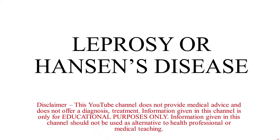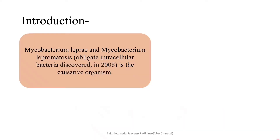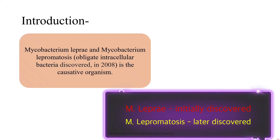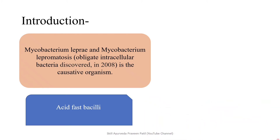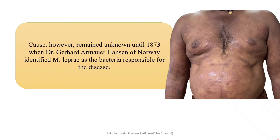Today I am going to talk about leprosy, that is Hansen's disease. The causative organisms are Mycobacterium leprae and Mycobacterium lepromatosis, which is an obligate intracellular bacteria discovered in 2008. Initially only Mycobacterium leprae was said to be the causative organism, but in recent advances Mycobacterium lepromatosis is also recognized as a causative organism for leprosy, which is an acid-fast bacillus. The cause remained unknown until 1873, when Dr. Gerhard Armor Hansen of Norway identified Mycobacterium leprae as the bacteria responsible for the disease.